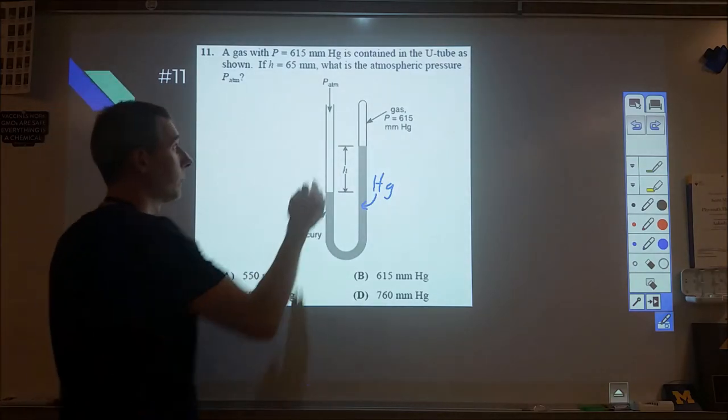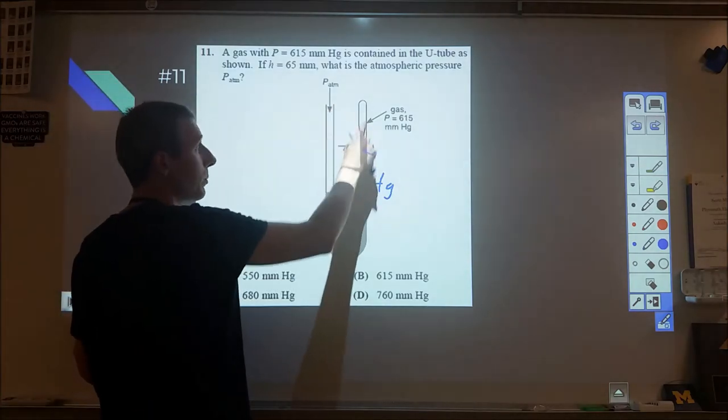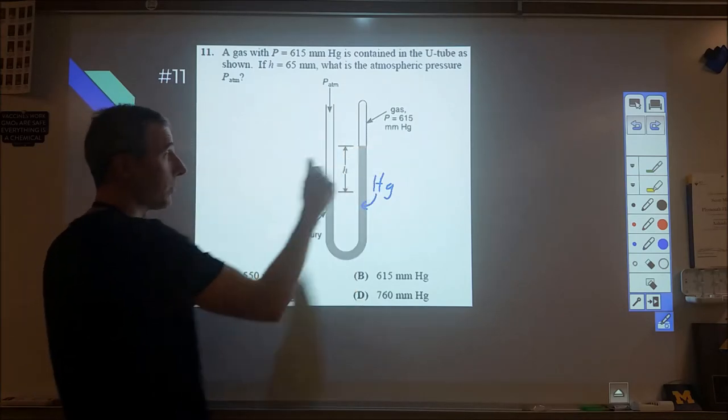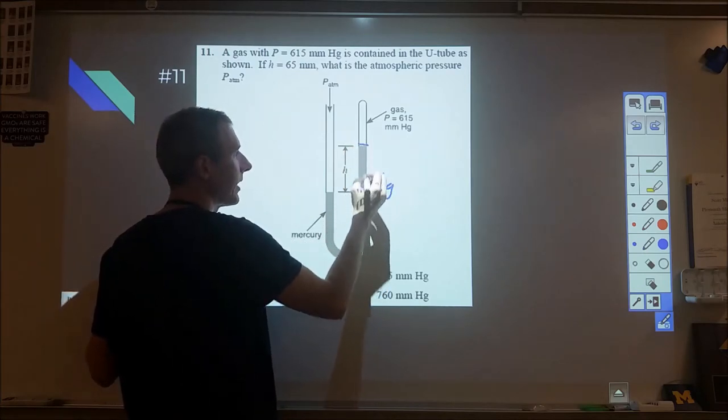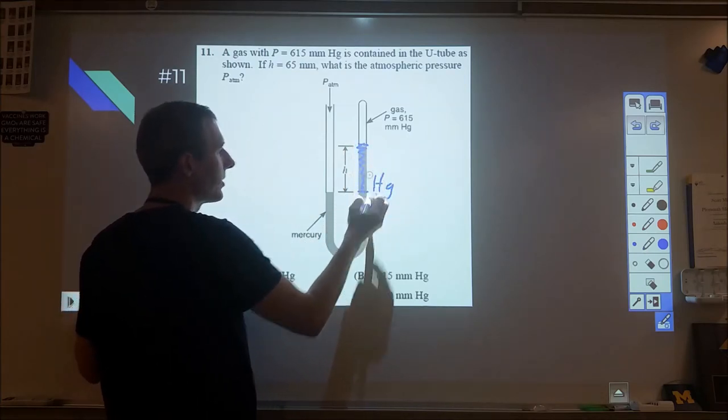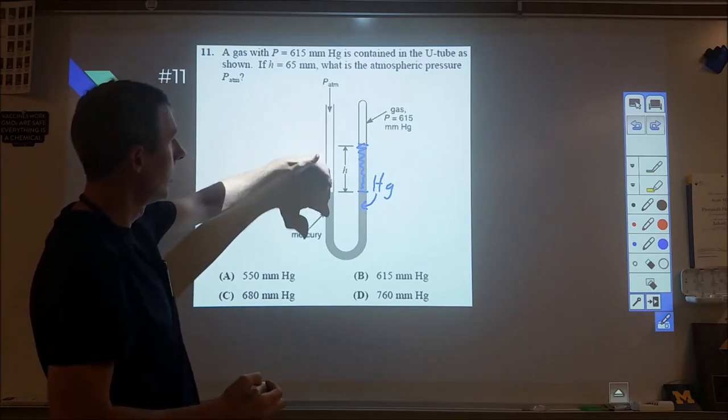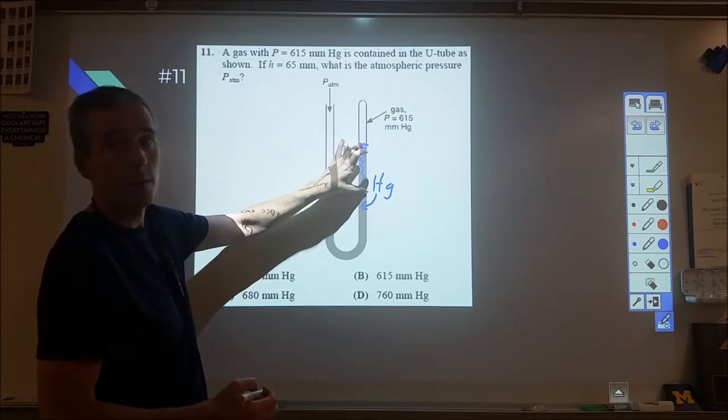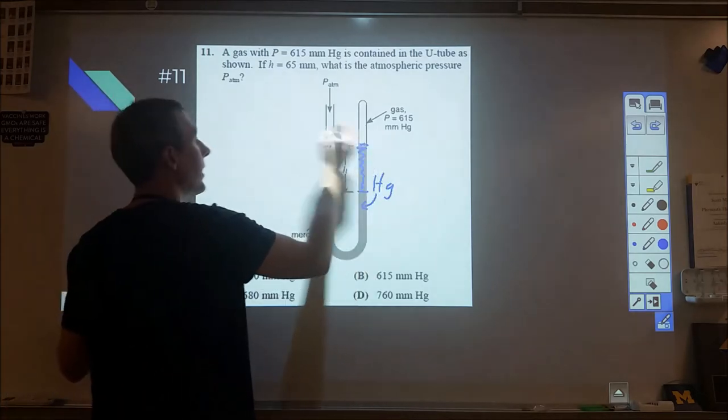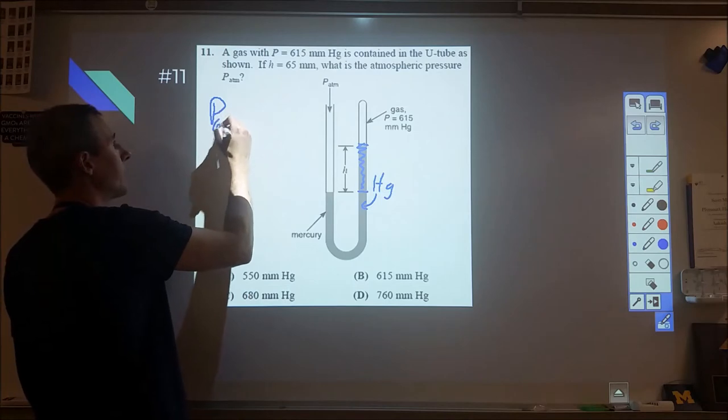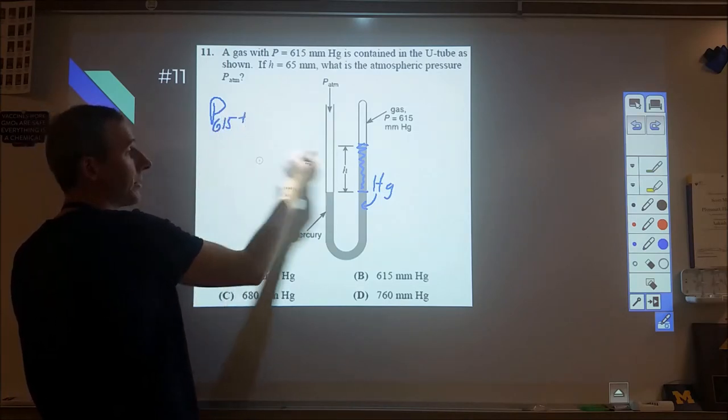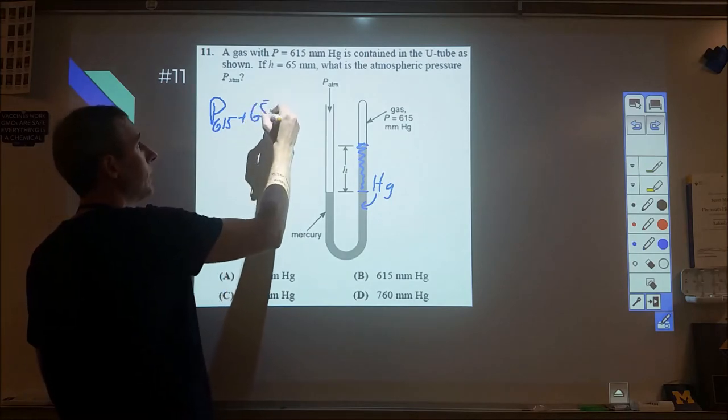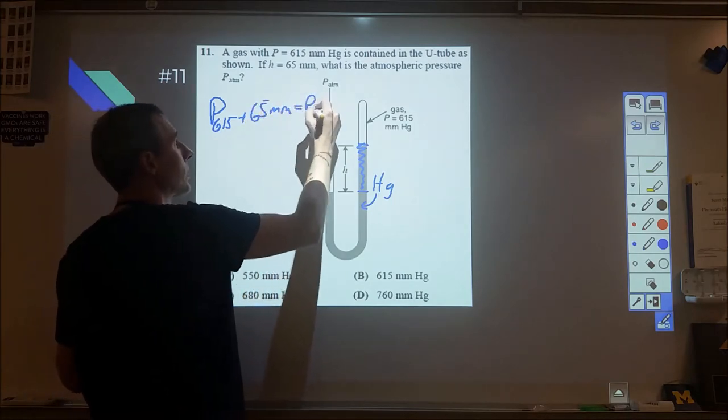The way you want to attack these if you're not familiar is to look at which side is pushing more. In this case, the atmosphere is pushing more than the pressure of the trapped gas by the mercury from this height to this height. So basically, this side is pushing with a certain pressure that's equal to the pressure here plus the pressure from the weight of that mercury. These kind of total up, so we have this pressure of 615 millimeters mercury plus the pressure from the weight of the 65 millimeters equals the pressure of the atmosphere.